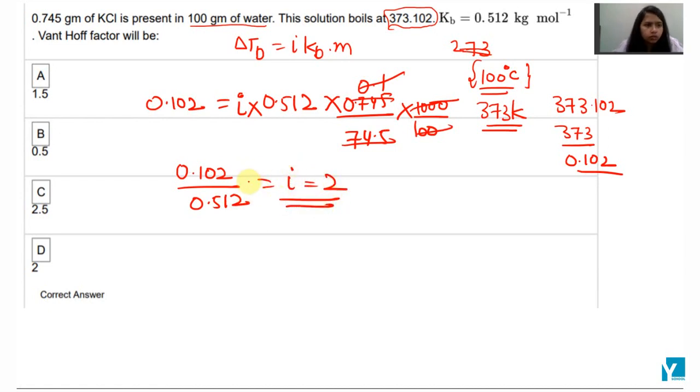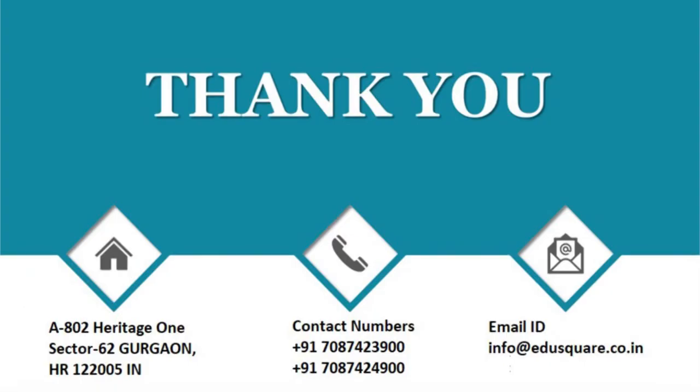i value is 2. That is Van't Hoff factor is 2 which is our D option and the correct answer.